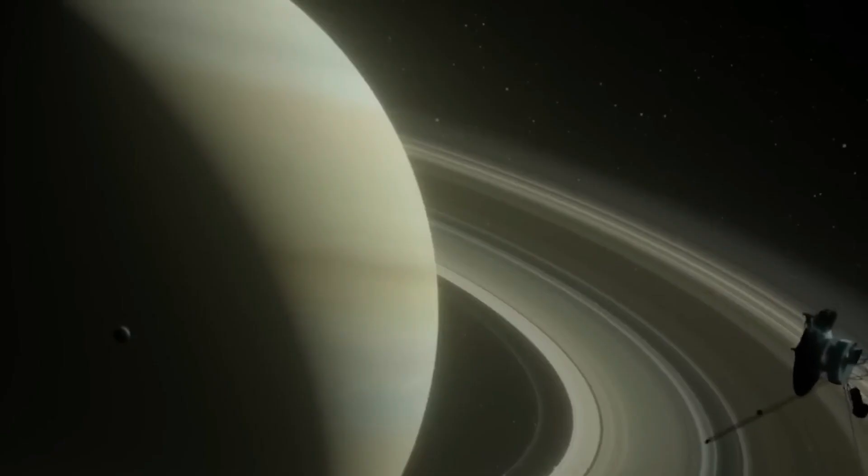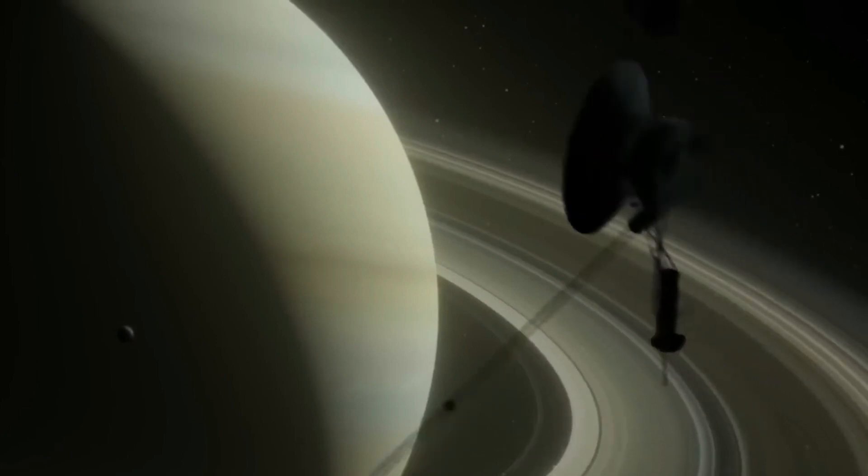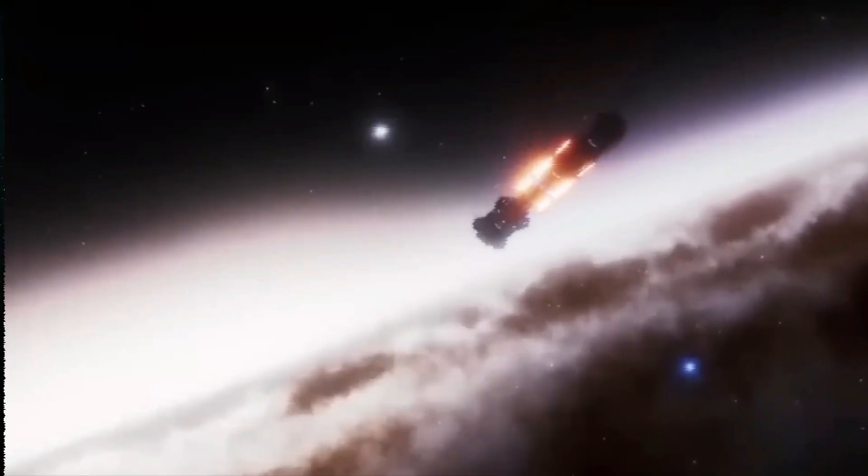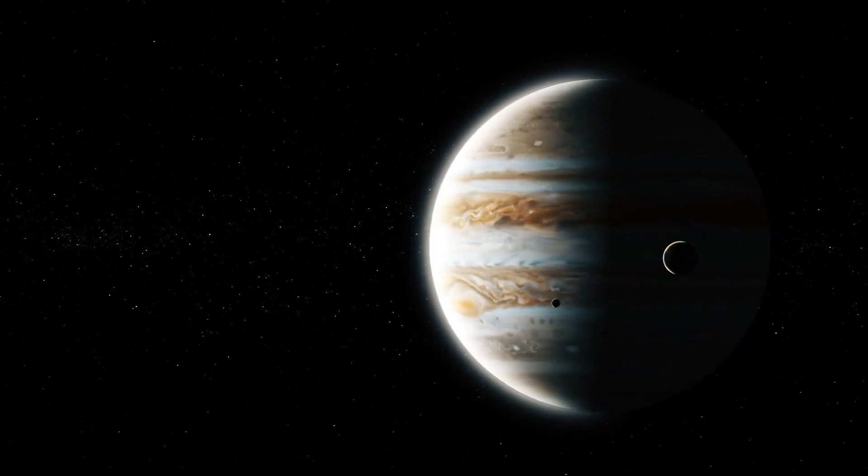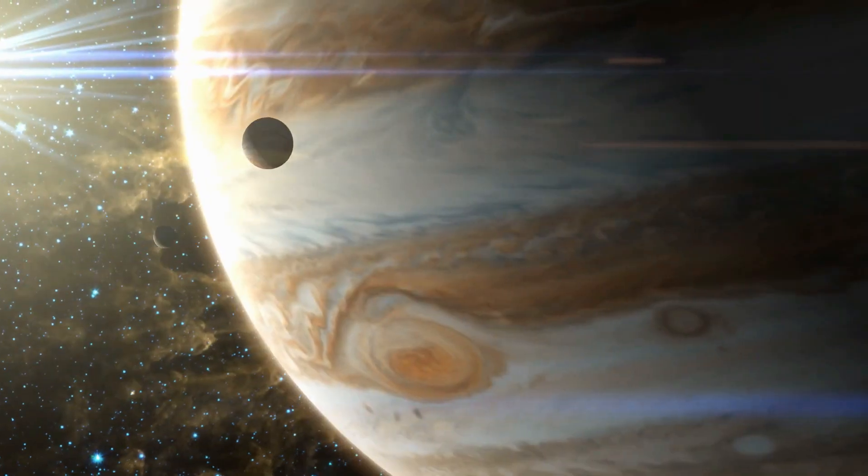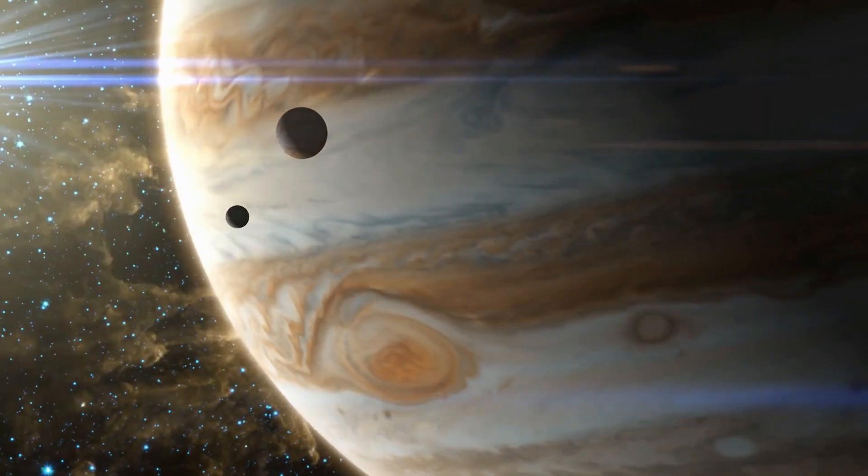During its trip around Saturn, Voyager 1 found four moons and sent back many pictures of the ringed planet to NASA. It would have to slightly change its path to avoid hitting Titan, one of Saturn's biggest moons. After this, NASA decided that the Voyager 1 mission should be over.